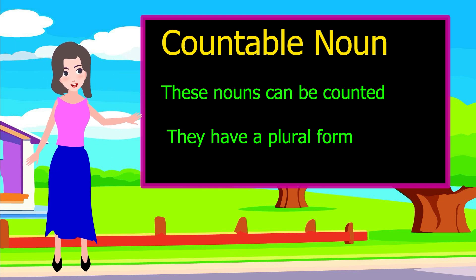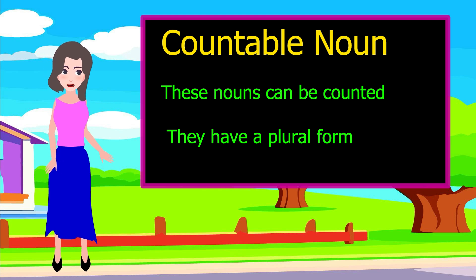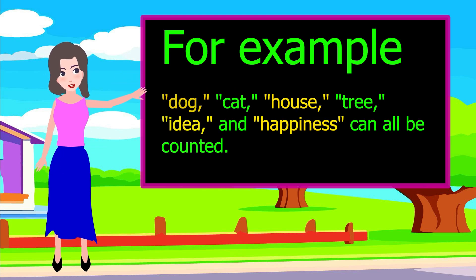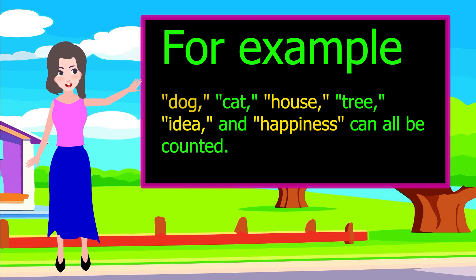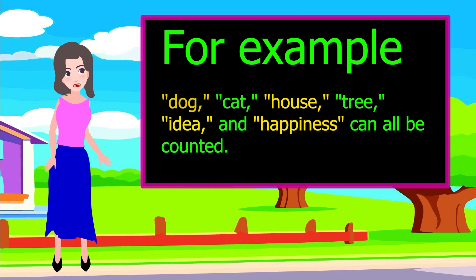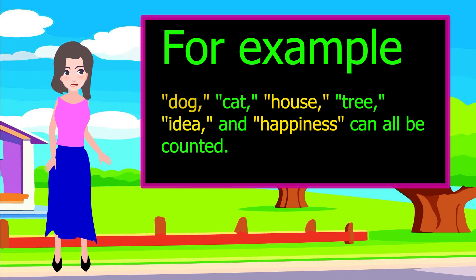Countable nouns can be counted. They have a plural form. For example, dog, cat, house, tree, idea, and happiness can all be counted.